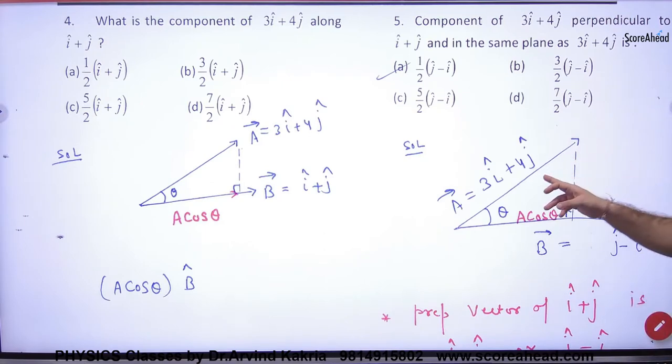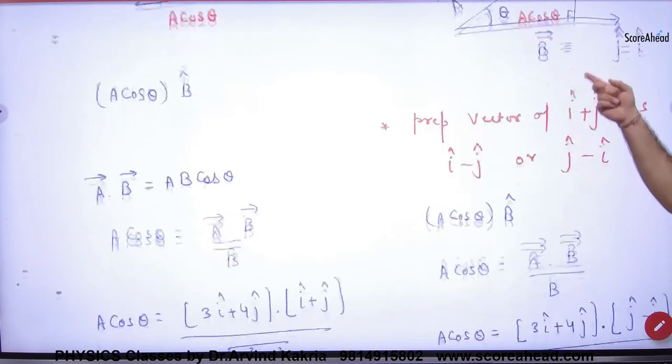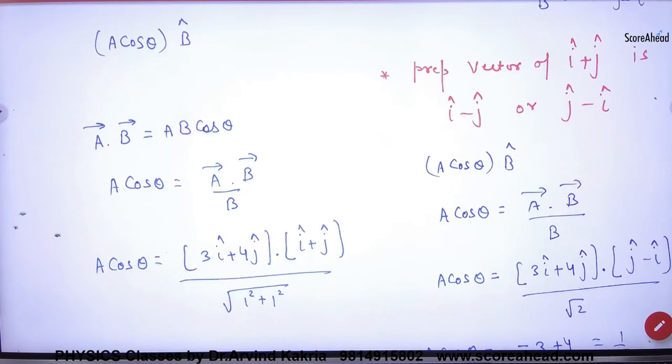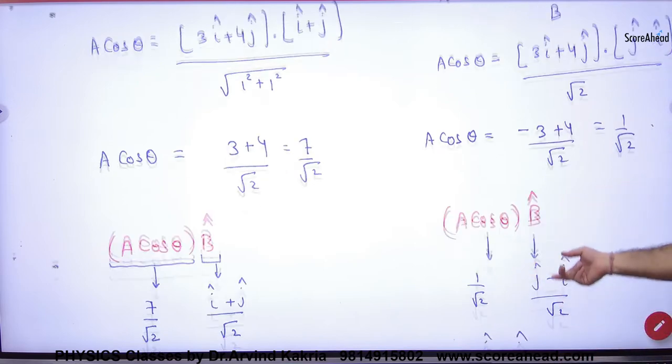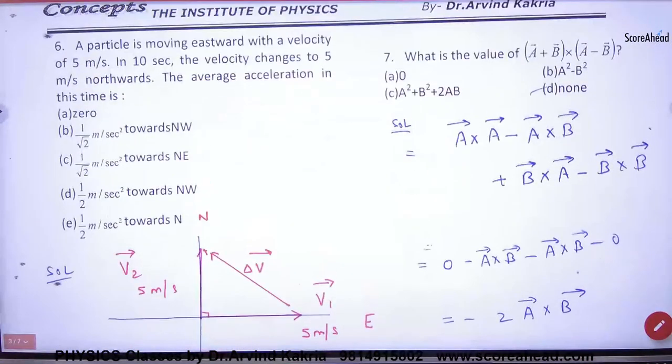So the previous question is, what will the component of this vector be? j minus i. So what will it be? A cos theta, what will it be? b cap. A cos theta dot product, b cap is a vector by its magnitude. So the point is clear, how to do it? The starting step is clear. You can see the calculations on Google Drive. Question number six.